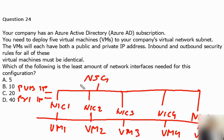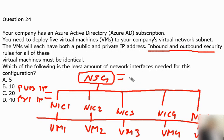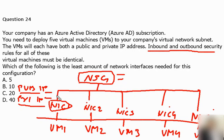Looking at the diagram: we have one network security group with inbound and outbound traffic rules defined. That network security group is associated with NIC 1, NIC 2, NIC 3, NIC 4, and NIC 5 — one for each virtual machine. Each NIC has both a public IP address and a private IP address defined. The question asks for the minimum number of network interfaces needed, and the answer is five network interfaces.